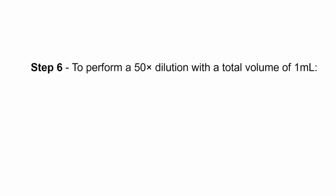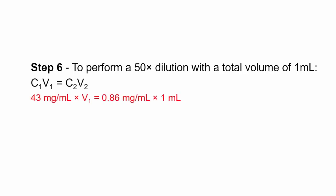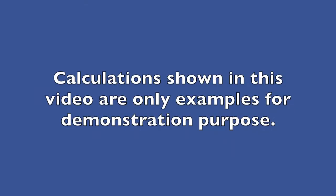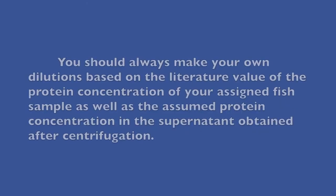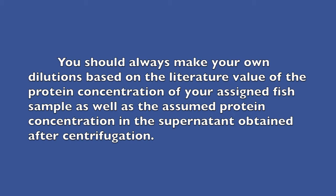To perform a 50 times dilution with a total volume of 1 milliliter, 13 microliters of supernatant can be added to 987 microliters of DD water. These are just two examples of the dilutions you can make. You should always make your own dilutions based on the literature value of protein concentration in your assigned fish sample, as well as the assumed protein concentration in the supernatant you obtain after centrifugation.